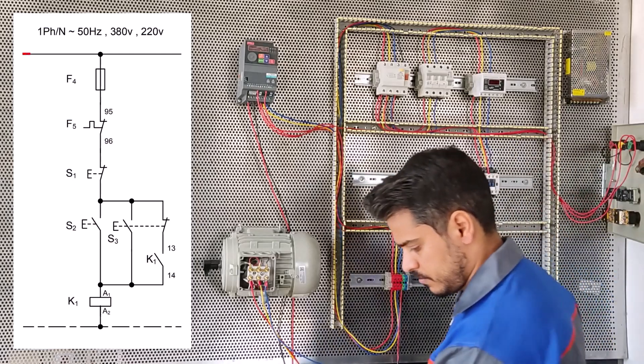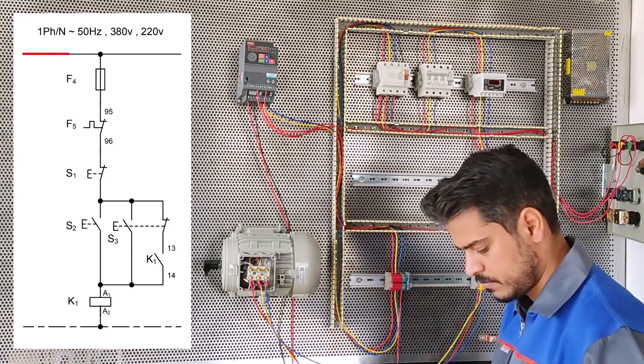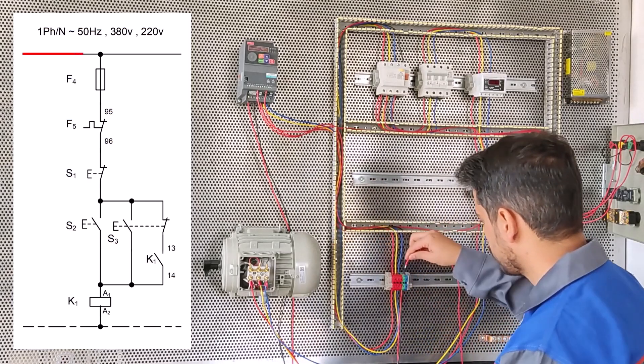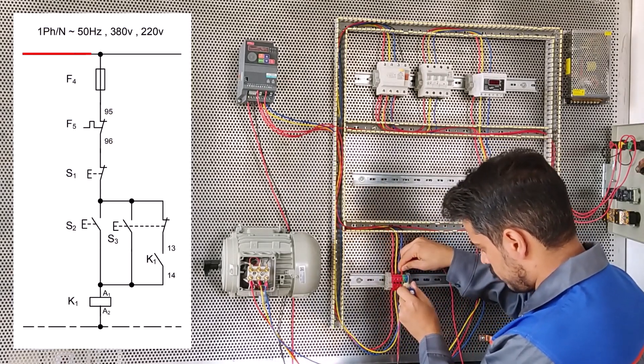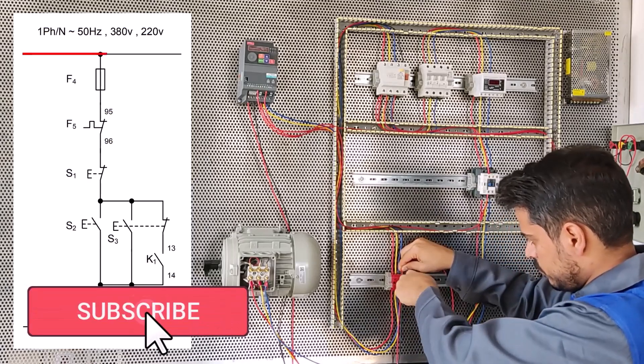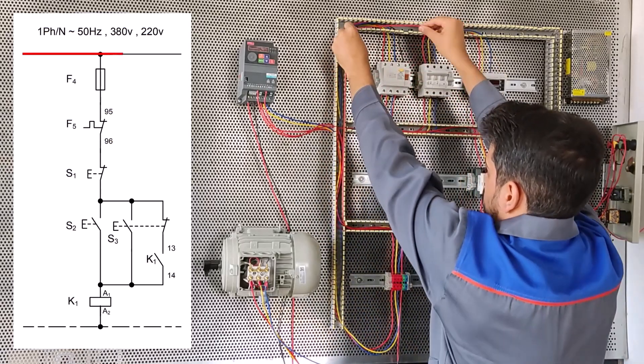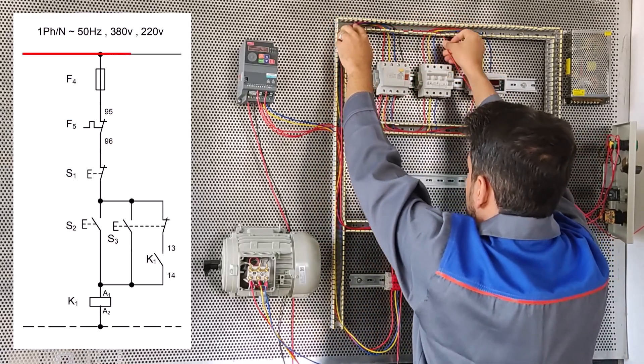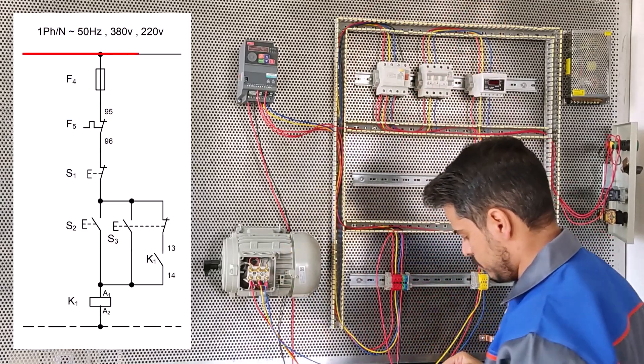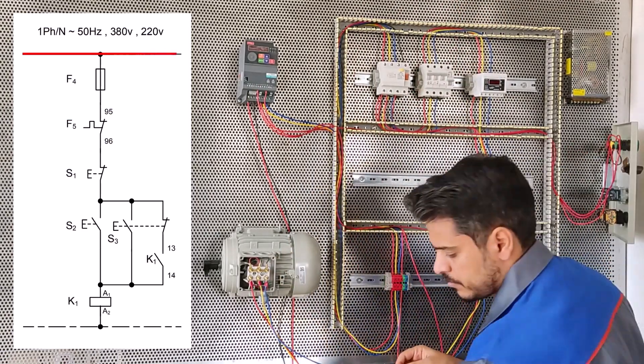Hello, in this video we want to explain to you how to start a motor instantly and permanently with a conductor and two inputs. One is momentary and the other is permanent. The starting power circuit is direct but the control circuit has changed.